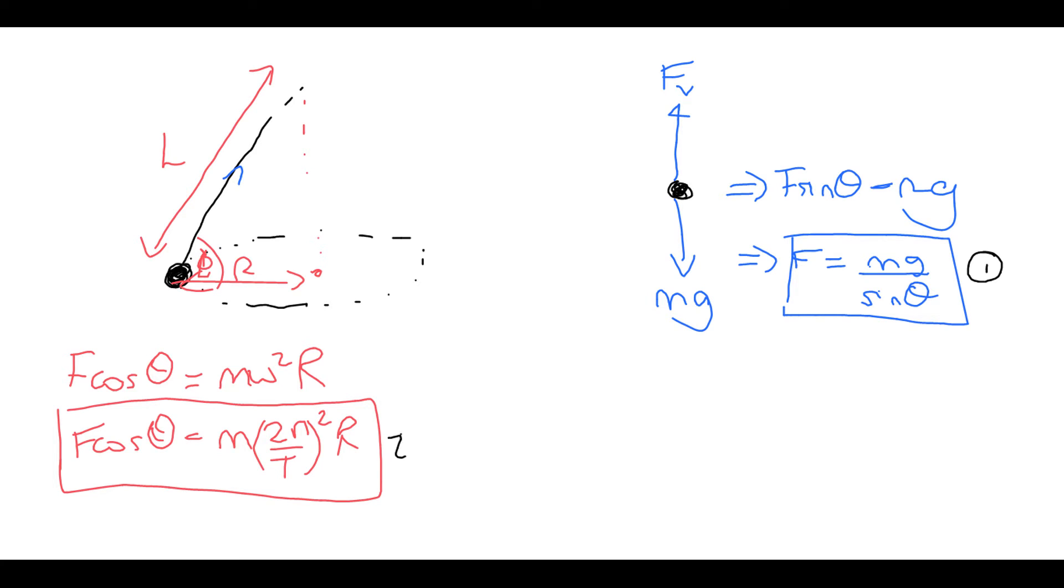Into this one equation two. So what we get if we do that is we get mg over sin theta times cos theta is equal to m 4 pi squared r all over t squared. And if we look at our diagram here.